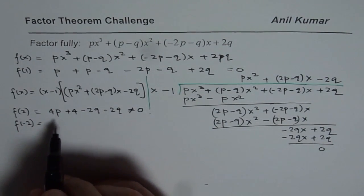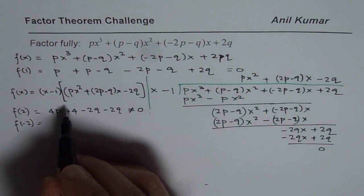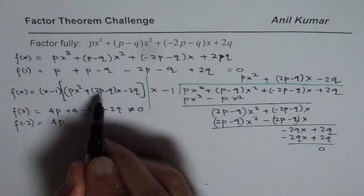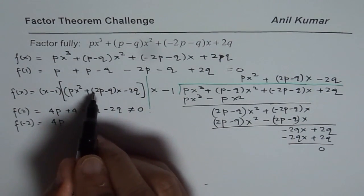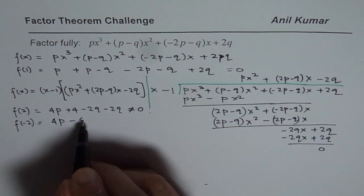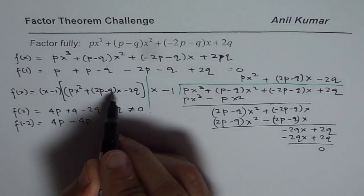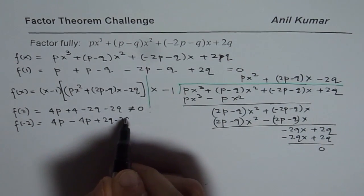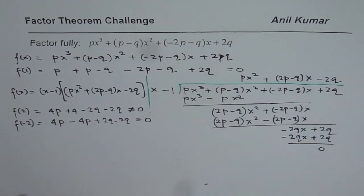Let me try f(-2). If I try f(-2), I will get -2 squared is 4, so it is 4p. -2 times -2p becomes -4p. -2 times -q is +2q, and -2q, that equals 0.